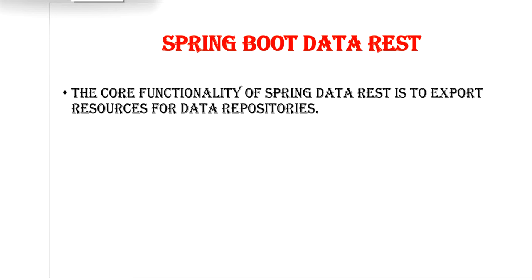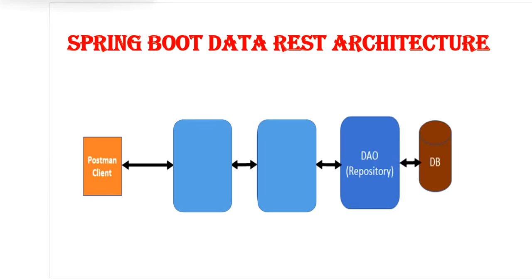The core functionality of Spring Data REST is to export resources for Spring Data repositories. It means we don't need to create a controller or service layer. We just need to create only the DAO layer and it will directly communicate with the database and also expose all the REST endpoints for our service. Spring Data REST automates the creation of RESTful services — with just a simple entity class and a repository interface, it can effortlessly generate complex REST APIs.